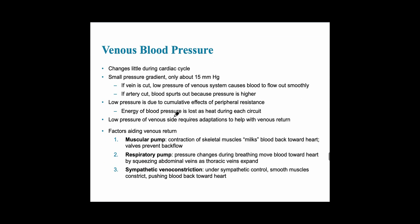There are little changes for venous pressure during the cardiac cycle — there is a small pressure gradient. If a vein is cut, the low pressure of the venous system causes blood to flow out smoothly. When taking blood, a needle is put into a vein; veins are always more superficial than arteries, so nicking a vein is not as serious as nicking an artery. Veins have much lower pressure, so there must be additional factors that increase blood flow back towards the heart — this is called venous return, which relates to preload going back into the right atrium.